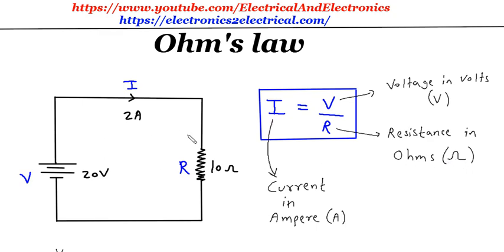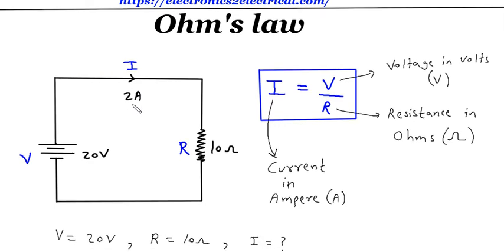Suppose this is a circuit which is having 20V battery or voltage source and 10 Ohm resistance. If we want to find this current then we will use this formula.